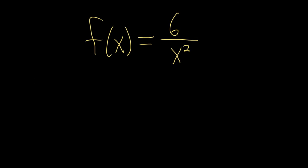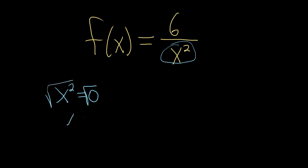Step one is you simplify — there's nothing that can be simplified. Step two is to set the bottom piece equal to zero. So in this case we just set x squared equal to zero. Then we solve for x by taking the square root of both sides, and we get x equals zero. And that's the vertical asymptote.